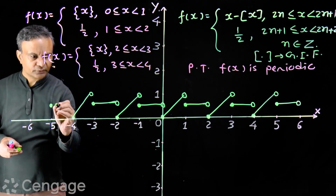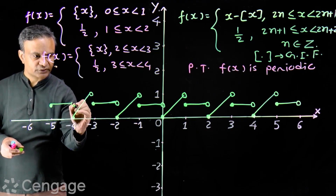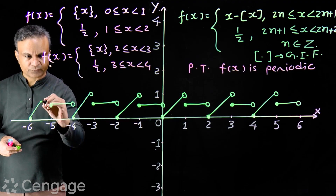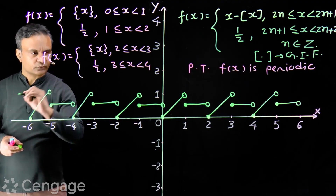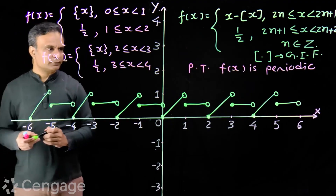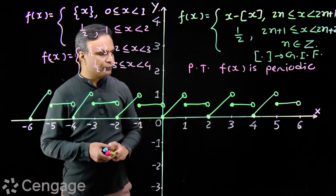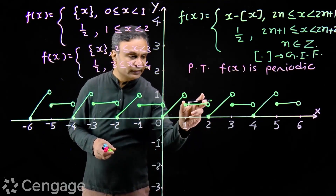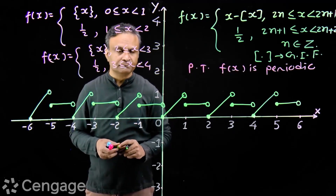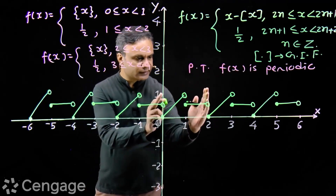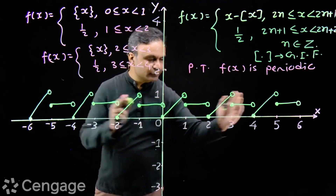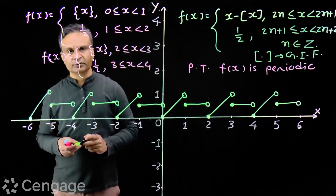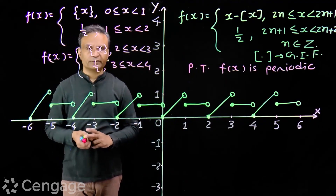From the graph, we can say that the function is periodic. The period of the function is 2 — we have a slant line segment followed by a horizontal line segment, and this assembly is repeated throughout. Therefore, function f(x) is periodic with period 2. It is a unique function.